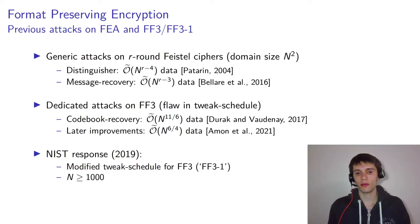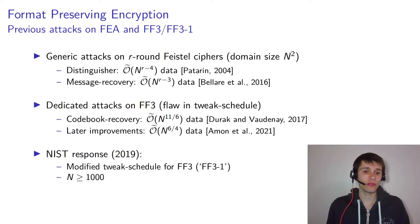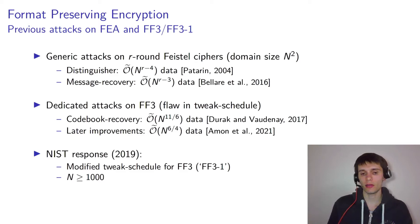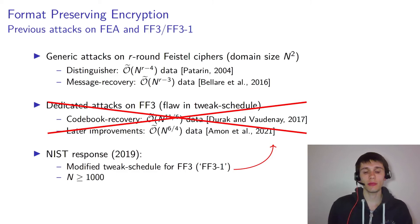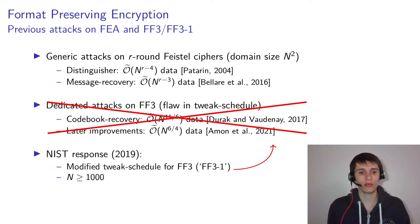The latest iteration of that will be presented at Eurocrypt this year. NIST did respond to these attacks — they modified the tweak schedule for FF3, which is why the standard was revised and is now called FF3-1. This modification essentially eliminates completely the flaw in the tweak schedule, so these dedicated attacks are no longer a concern. They also require that the domain size is at least 1 million, which doesn't prevent the generic attacks but does make them less practically relevant.